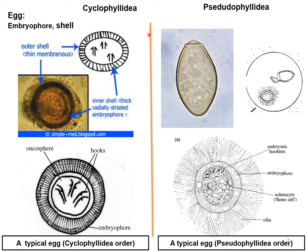Cestodes under these two suborders have unique characteristics in their eggs. In my introductory lecture on cestodes I discussed the morphology of a typical cestode egg. The egg has different layers: the innermost is the embryo, which has six hooks — that is why it is also known as the hexacanth embryo. This is encircled by a layer called the oncosphere membrane, and the next two layers together are known as the embryophore.